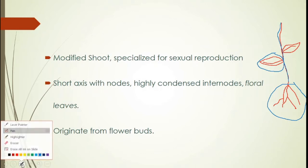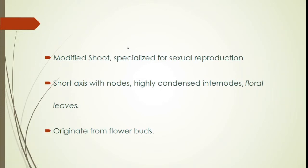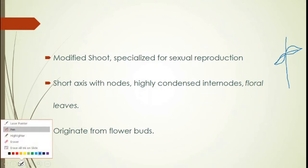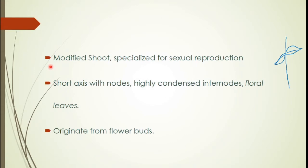It is this portion — the portion found through the entire length of the plant called the shoot, which possesses leaves — that is responsible for getting modified into a flower. So the flower is a modified shoot which is specialized for the process of sexual reproduction.